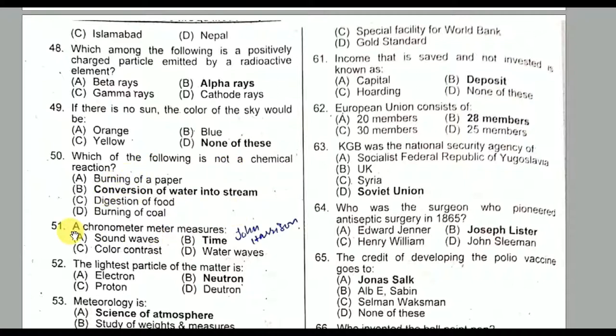Question number fifty-one: A chronometer measures what? Option B — time — is the correct option.